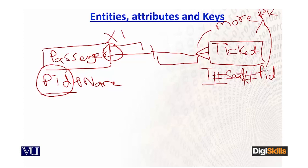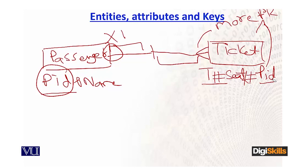Otherwise it will be wrong. This foreign key — PID — is written here in addition to all the attributes already present in the ticket table, which currently are ticket number and seat number. After all ticket attributes, I must write the foreign key. Now, whether I make this foreign key part of the primary key (composite key) or not — there is no fixed rule in one-to-many for that. If I underline it, it becomes part of a composite primary key, meaning ticket number and passenger ID together form the primary key, but there is still only one primary key with two columns.